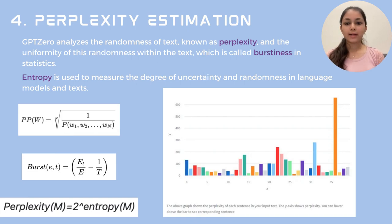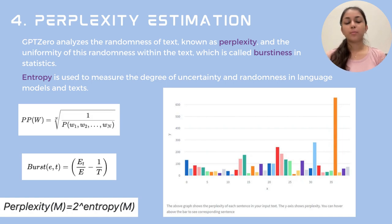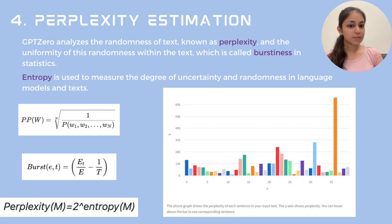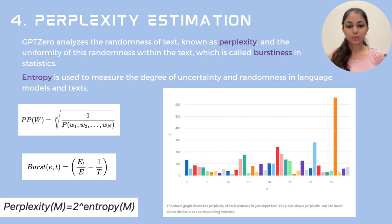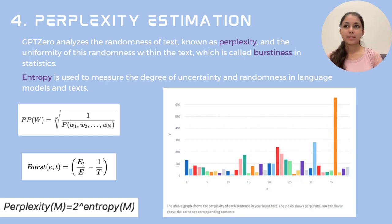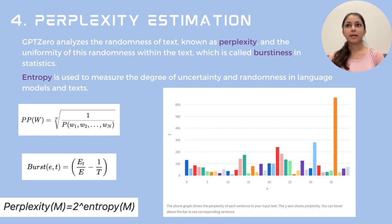Let us also look at perplexity estimation. GPT-0 is a technique that works on perplexity measure and burstiness measure, which respectively analyze the randomness of the text and the uniformity in that randomness. A lower perplexity score implies AI generation because it means the next word is easy to predict. While perplexity works on next-word prediction, burstiness evaluates the homogeneity of sentence length and variability in sentences. So we can say perplexity is to words as burstiness is to sentences.